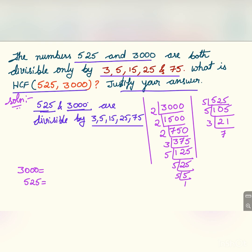These numbers—3, 5, 15, 25, and 75—are called common factors of 525 and 3000. Therefore, 75 is the HCF since it is the highest common factor among all these numbers.